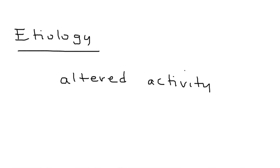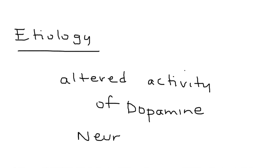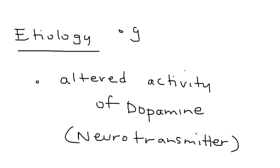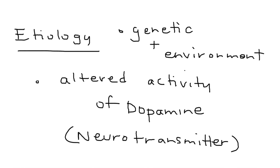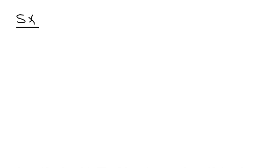Why do certain people around age 20 to 25 all of a sudden deteriorate and develop these very worrisome psychiatric problems? It involves a neurotransmitter called dopamine, which is a very common neurotransmitter involved in brain activity. In addition, it definitely has a genetic plus an environmental component with regard to etiology.